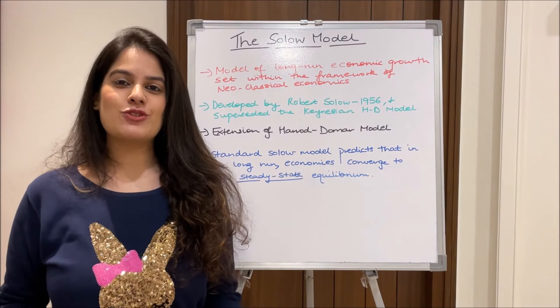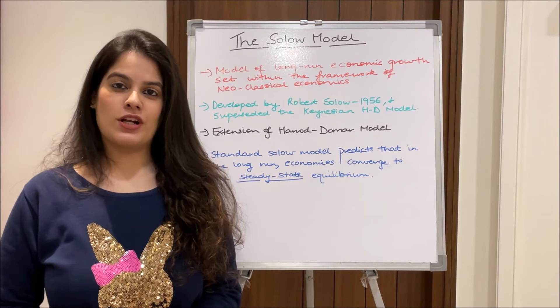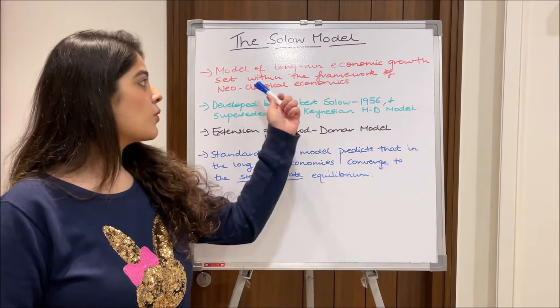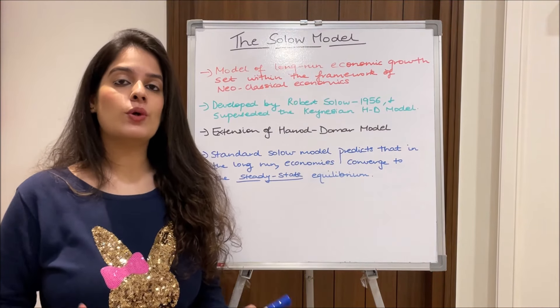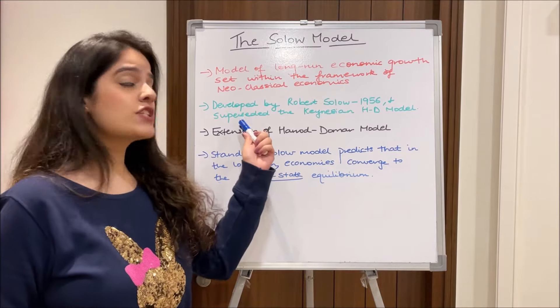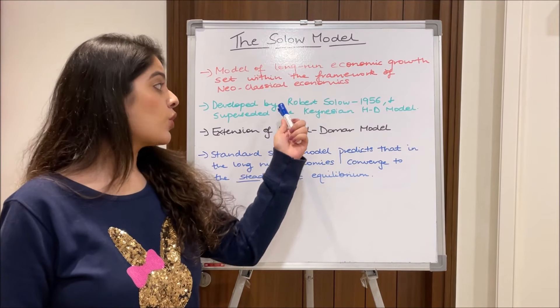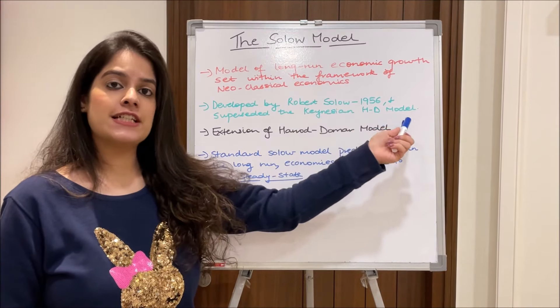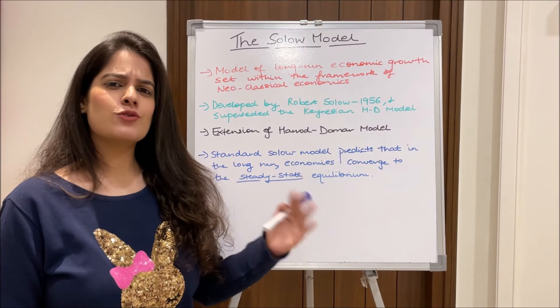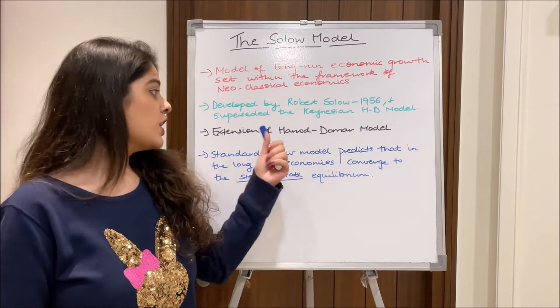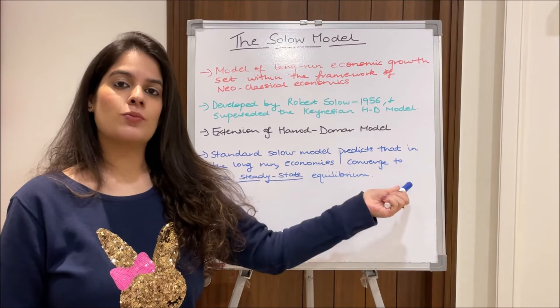So coming to the introduction and the background of the Solow model. The Solow model is a model of long-run economic growth set within the framework of neoclassical economics. It was developed by the Nobel Prize winner Robert Solow in 1956 and it superseded the Keynesian Harrod-Domar model. You can also say that it is an extension to the 1946 Harrod-Domar model.